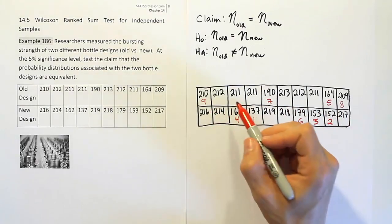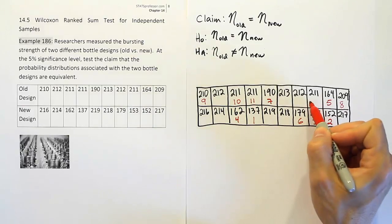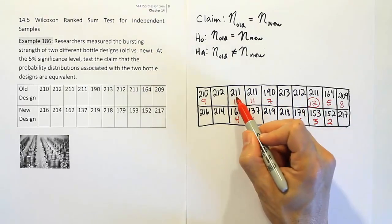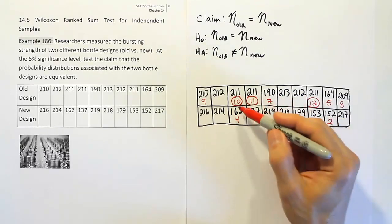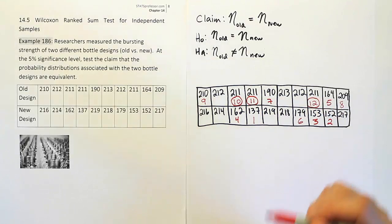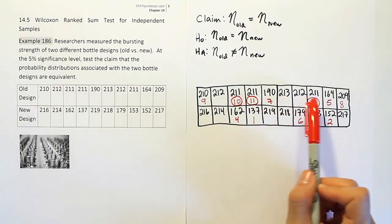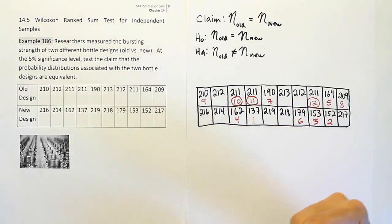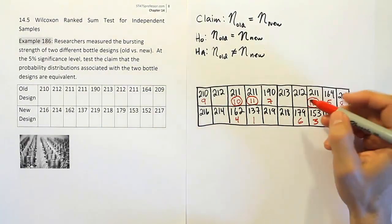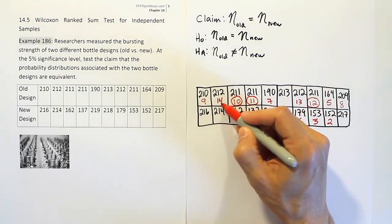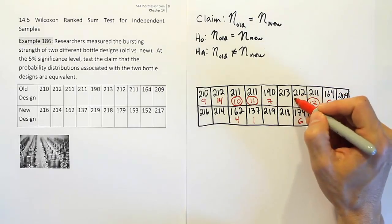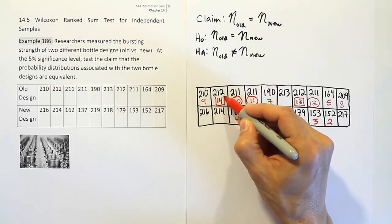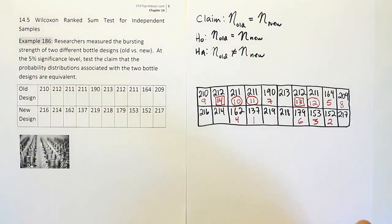Since all three values are 211, they can't remain different ranks. I'll circle them — use a circle, square, or different color pen — just a visual reminder to go back and fix them. Next, 212 appears twice, so those get ranks 13 and 14, which I'll mark with a rectangle to distinguish them from the 211 group. These are also ties that need to be corrected.